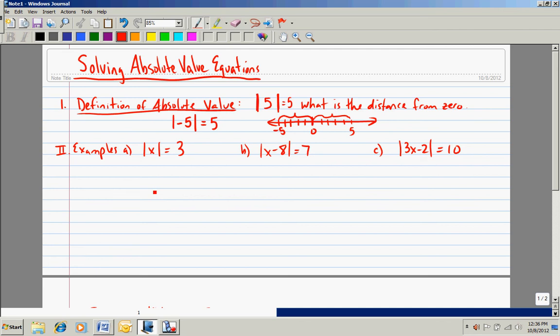Example A. The absolute value of x is equal to 3. Since we have x inside the absolute value symbols, we're trying to figure out which values are 3 spaces from 0. Again, thinking about a number line, there's 0. If I go 3 spaces to the right, I'm at positive 3. If I go 3 spaces to the left, I'm at negative 3. So the answer to this problem is actually x can be equal to 3 or x can be equal to negative 3, because both of those are 3 spaces from 0.